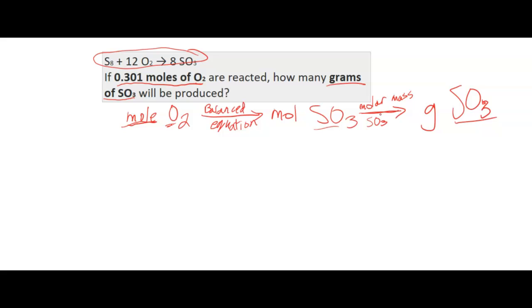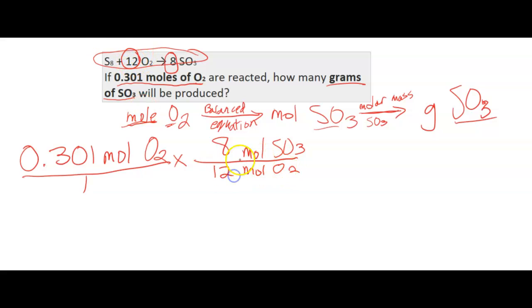So let's take a look at how we actually solve this problem. My first step, I'm going to go from moles of O2. So I have 0.301 moles of O2 over 1, so I can line everything up. I want to get to moles of SO3. I want to get rid of my moles of O2. I find my values from the balanced equation. So SO3 has a coefficient of 8, O2 has a coefficient of 12. So I can multiply that through.